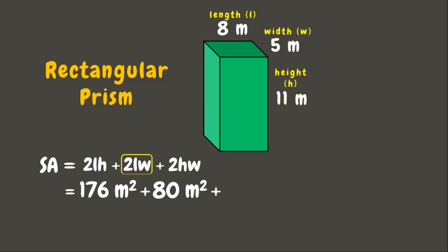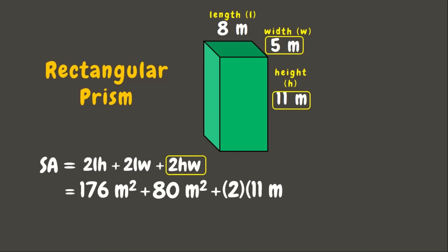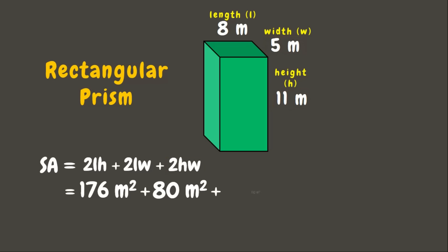Next, we have two times the height, which is 11 meters, times the width, which is 5 meters — and that would be 110 square meters. Now let us add the three areas; that will be 366 square meters. This is the surface area for our rectangular prism. Awesome!